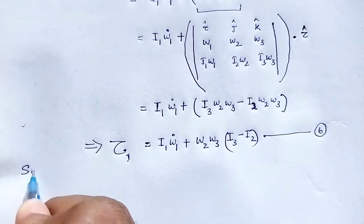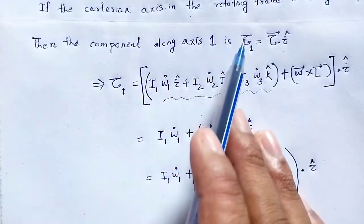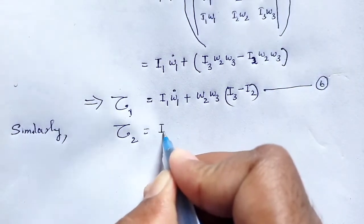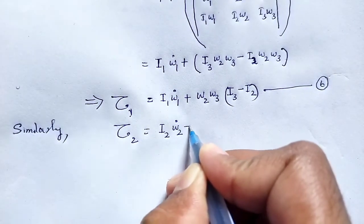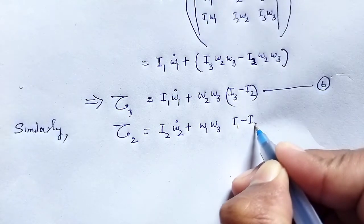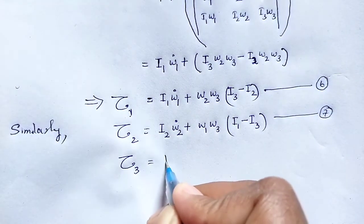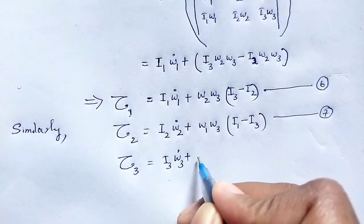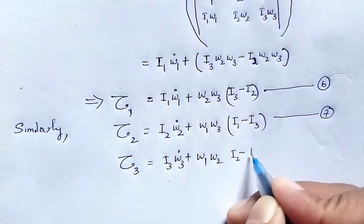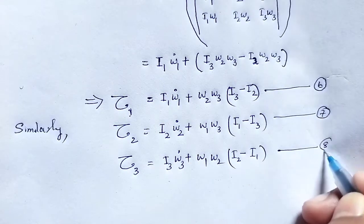Similarly, the component along axis 2 gives tau2 equals I2 omega2-dot plus omega1 omega3 times (I1 minus I3), which is equation number 7. And the component along axis 3 gives tau3 equals I3 omega3-dot plus omega1 omega2 times (I2 minus I1), which is equation number 8.